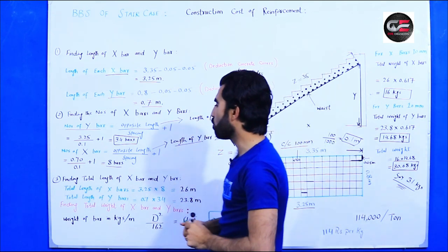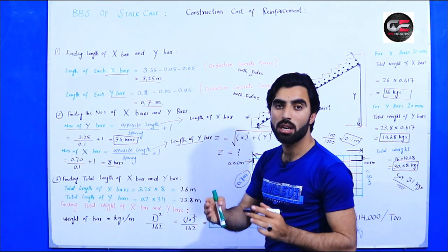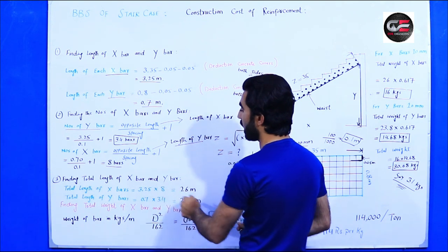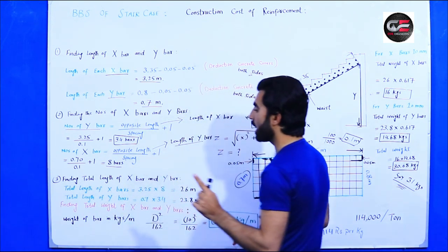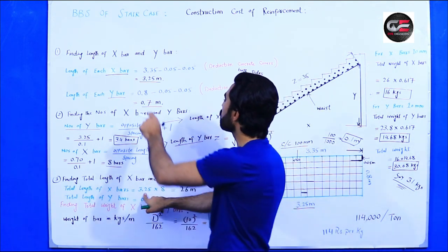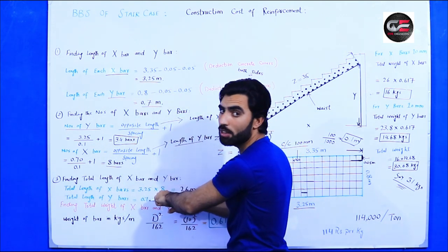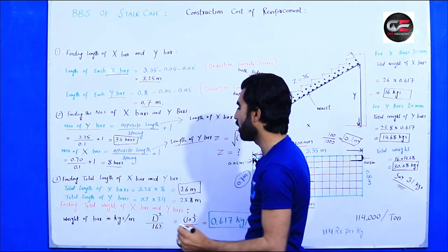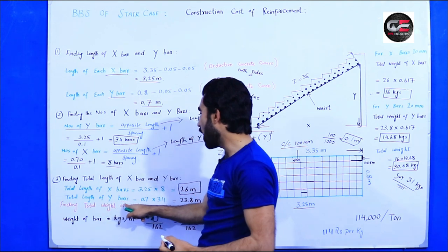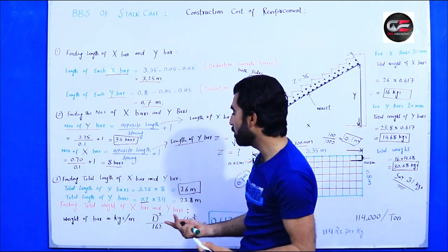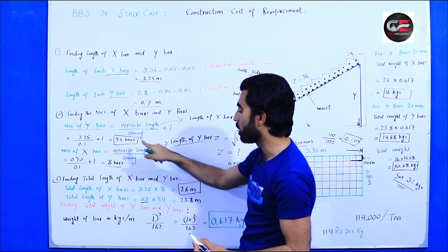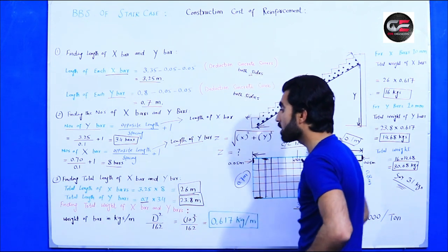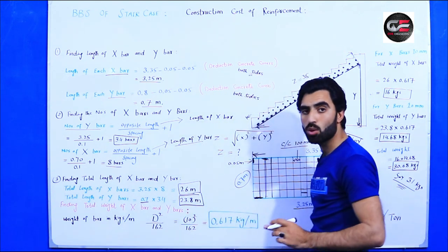Now finding the total length of x-bars and y-bars. Total length of x-bar: one x-bar is 3.25 meters, and we have 8 numbers, so 3.25 × 8 = 26 meters total length for x-bar. Total length of y-bar: one y-bar is 0.7 meter, and we have 34 numbers, so 0.7 × 34 = 23.8 meters total length for y-bar.